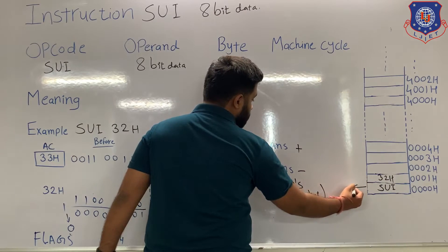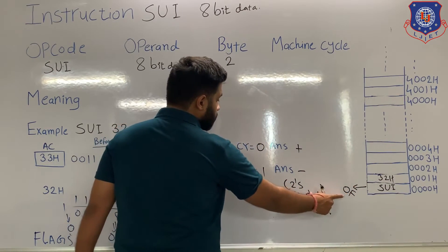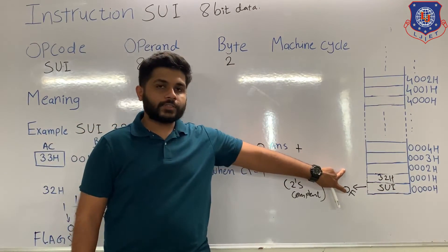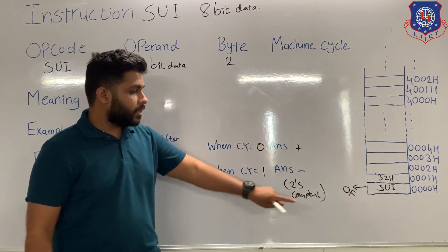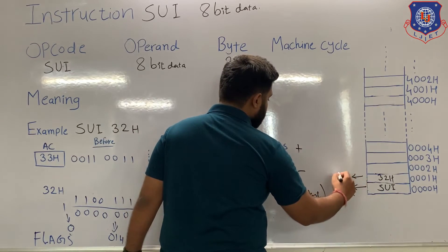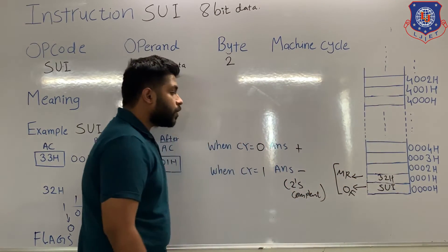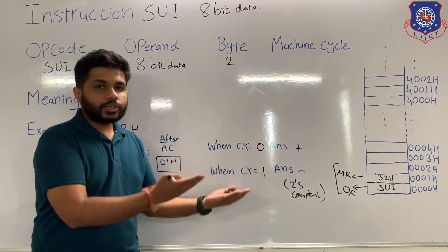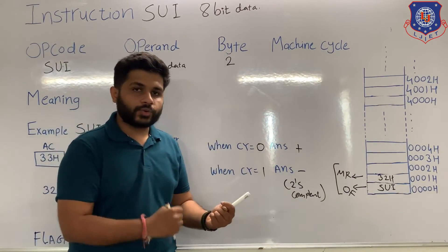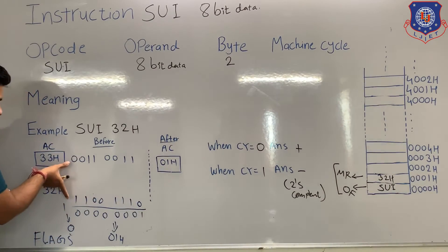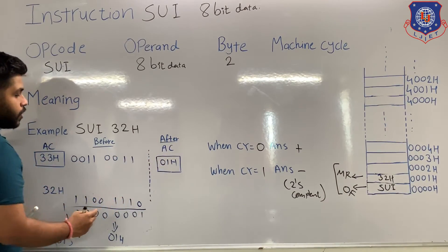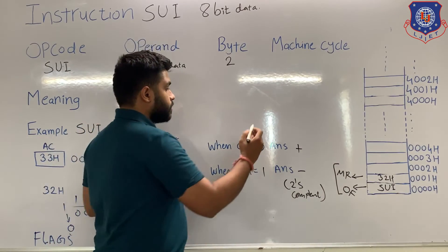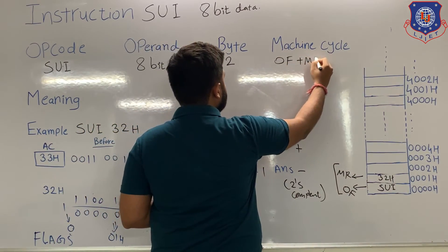To fetch, the microprocessor will use the machine cycle opcode fetch. When the microprocessor performs the opcode fetch, the opcode will be transferred. But the whole instruction is not transferred yet. To transfer the whole instruction, the microprocessor has to perform one more machine cycle — memory read. So when the microprocessor performs opcode fetch plus memory read, the whole instruction is transferred. Then the processor will decode and execute. During execution, the processor performs the subtraction and the answer is stored in the accumulator, with no further interaction with memory. So only 2 machine cycles are needed: opcode fetch plus memory read.